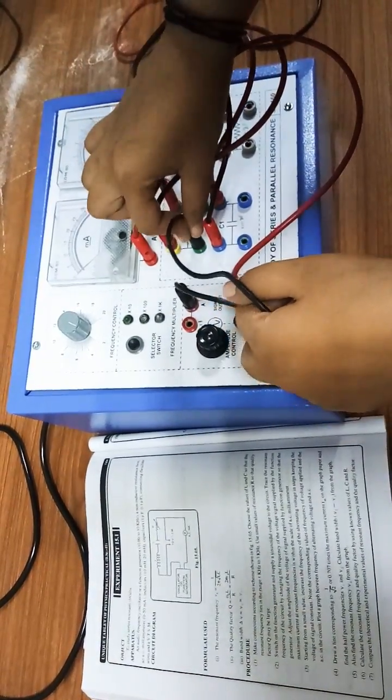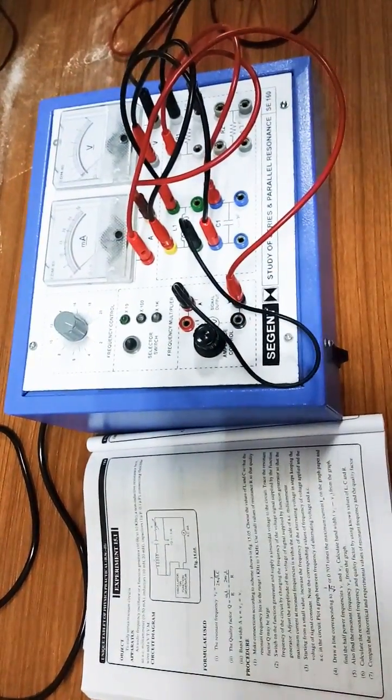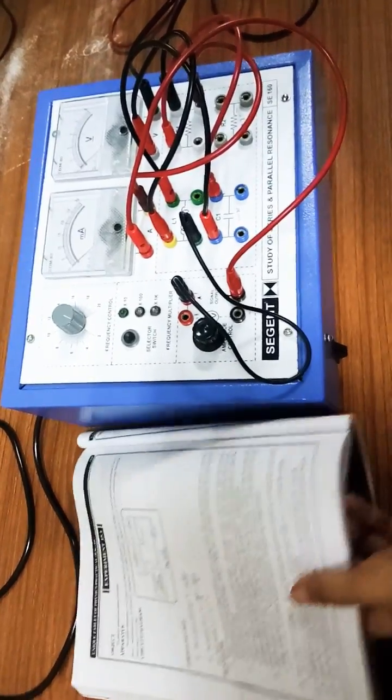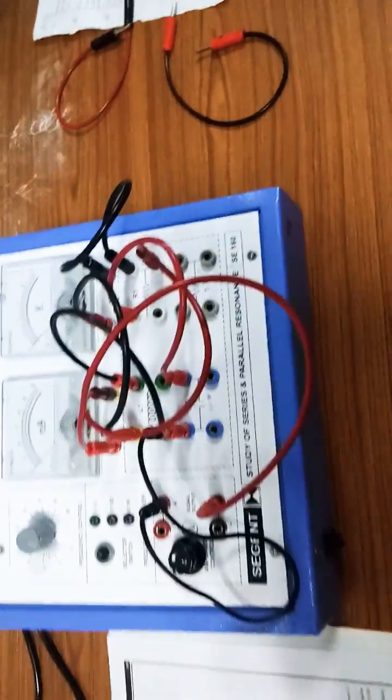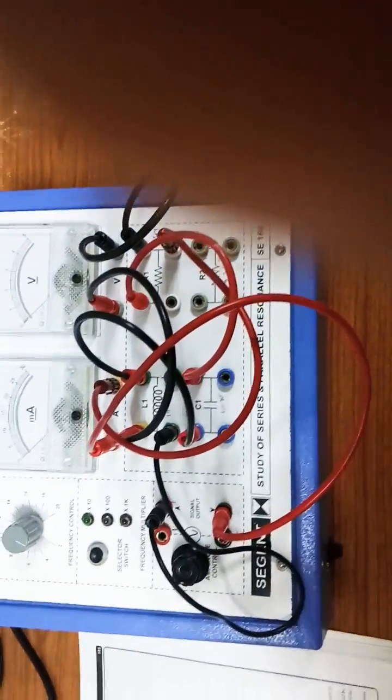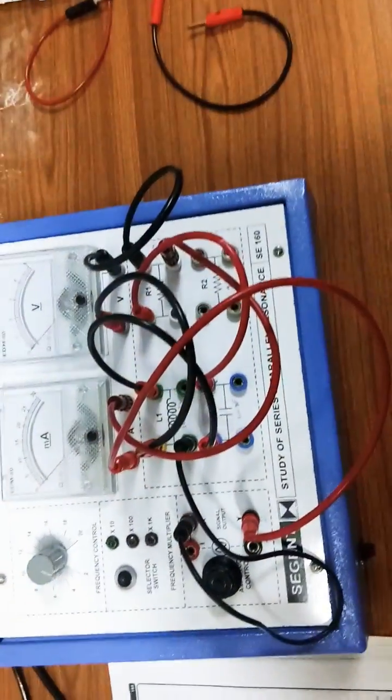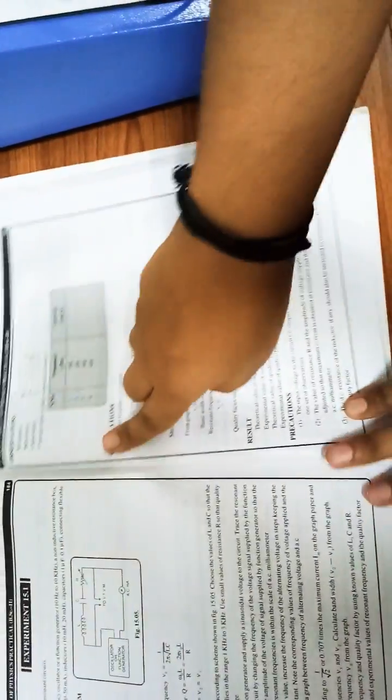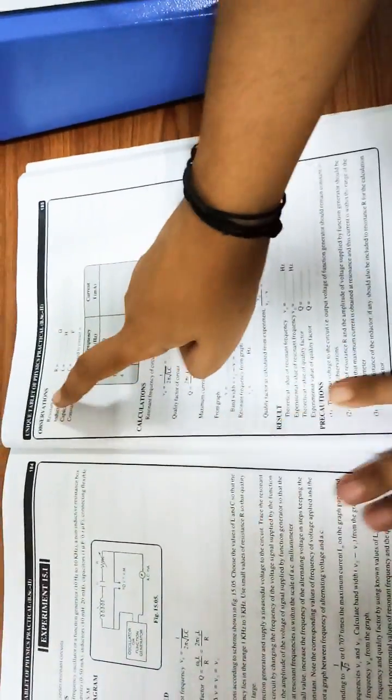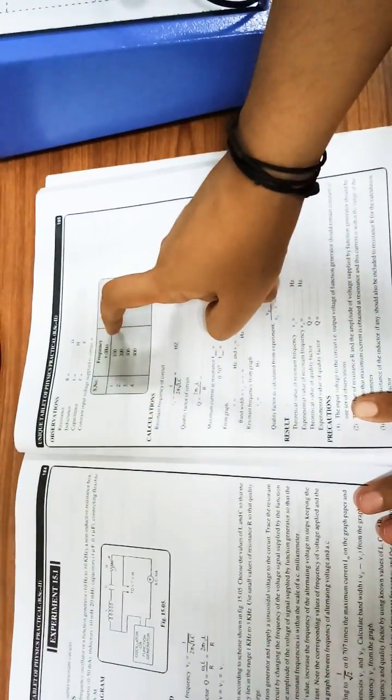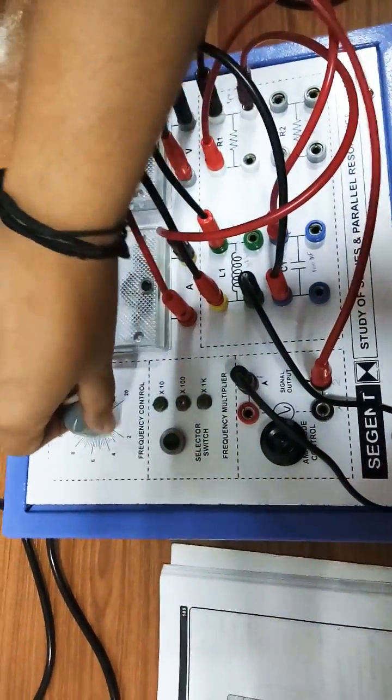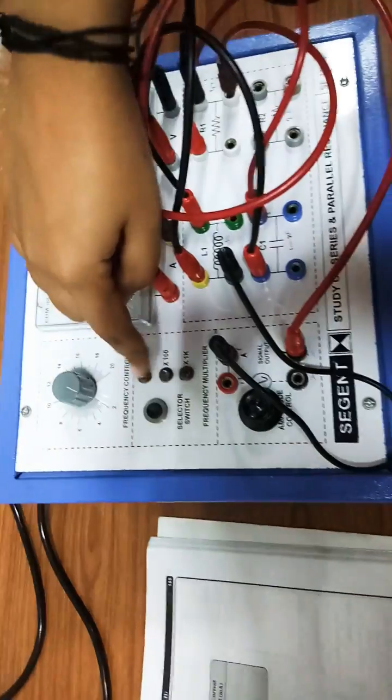And this is how your series resonant circuit is completed. This is how the table looks like, and this is how we'll vary the frequency. We'll vary the frequency from here.